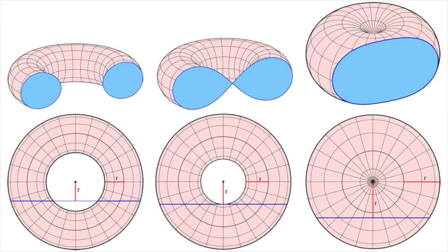Cassini ovals can be thought of as the set of curves produced when a circular torus is sliced at every possible point parallel to its axis.